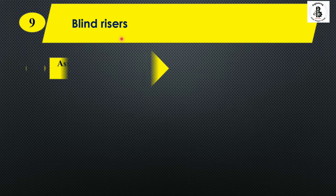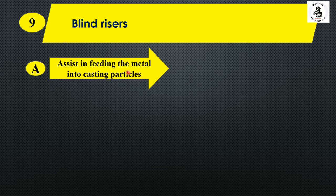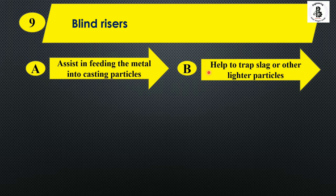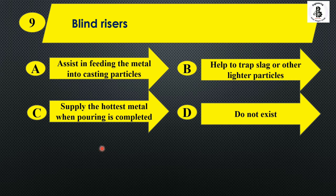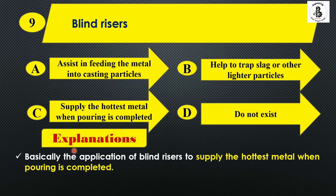Blind risers: Option A: assist in feeding the metal into the casting particles, Option B: help to drag slag or other lighter particles, Option C: supply the hottest metal while pouring is completed, and Option D: do not exist. Blind risers supply the hottest metal when pouring is completed, as they are not open to the environment — they are located in the cup area or side area. So the right answer is Option C.